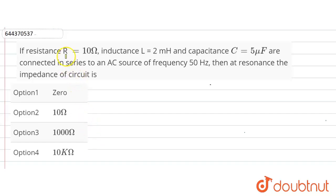Hello friends, the question is given here. If resistance R equals 10 ohm, inductance L equals 2 mH, and capacitance C equals 5 microfarad are connected in series to an AC source of frequency 50 Hz, then at resonance the impedance of the circuit.